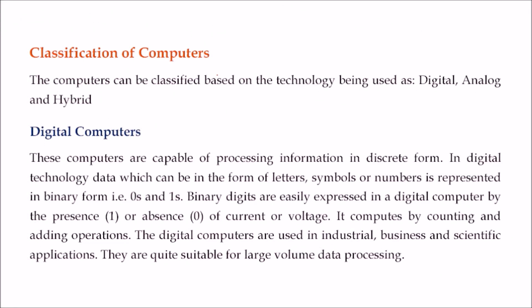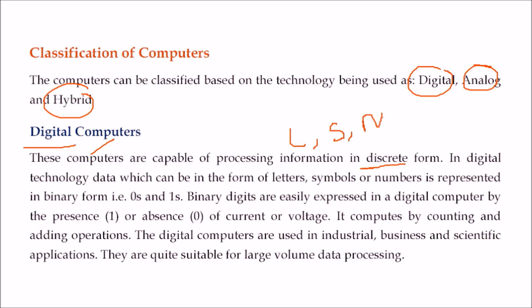The major classifications are in terms of digital, analog and hybrid. What is exactly a digital computer? These computers are capable of processing information in its discrete form — all the letters, symbols, and numbers are understood in the form of zeros and ones.